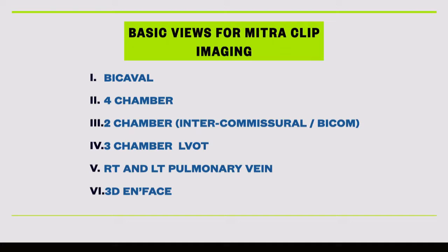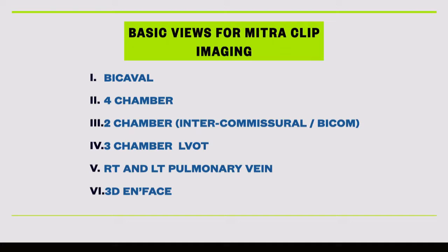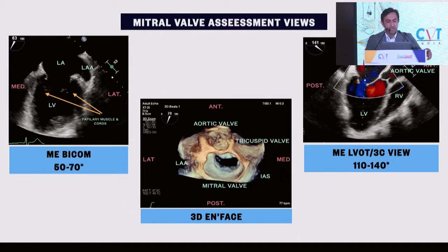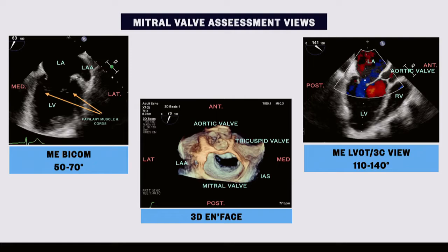TEE views for MitraClip: bicommissural, four-chamber, two-chamber, three-chamber, LVOT, right and left pulmonary vein. These views are needed because we are also doing a transeptal puncture. We need to understand the echo anatomy — medial to lateral — and the echo cardiographer needs to speak the same language: A1, A2, A3, P1, P2, P3, what structures are seen in bicommissural versus LVOT views at zero degrees.